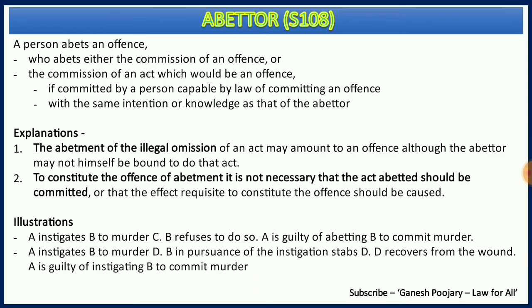Subsection 1 states: the abetment of the illegal omission of an act may amount to an offense, although the abettor may not himself be bound to do that act. In our example, B is required to give tablets to Mr. X daily; A abets B not to give the tablets — that is the illegal omission. By instigating B to not do the act he was supposed to do, A becomes the abettor.